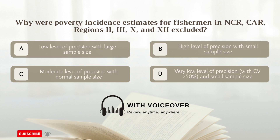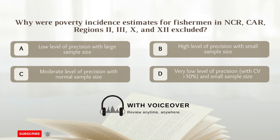Why were poverty incidence estimates for fishermen in NCR, CAR, Regions 2, 3, 10, and 12 excluded? A. Low level of precision with large sample size; B. High level of precision with small sample size; C. Moderate level of precision with normal sample size; D. Very low level of precision in small sample size. Answer D. Very low level of precision in small sample size.